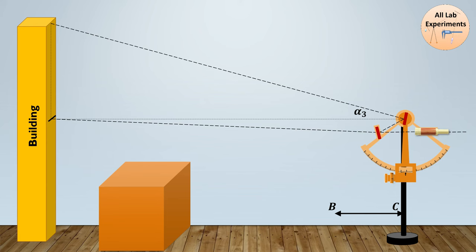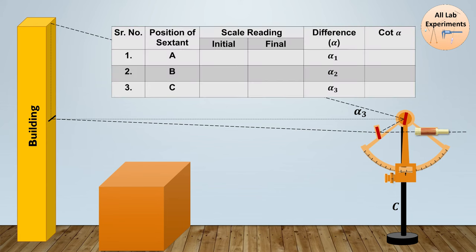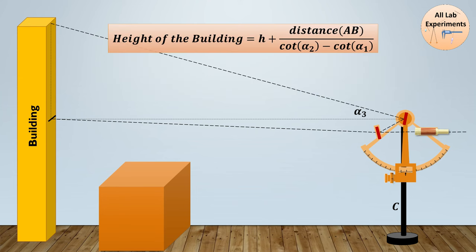Finally, just make a table of it. So overall at three positions A, B, and C, we observed the initial angle, we also observed the final angle, and their differences are alpha 1, alpha 2, and alpha 3. And finally we calculate this value cot alpha.